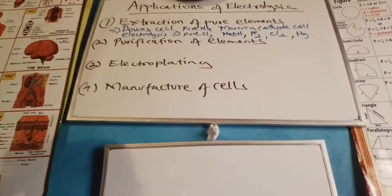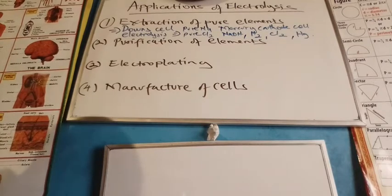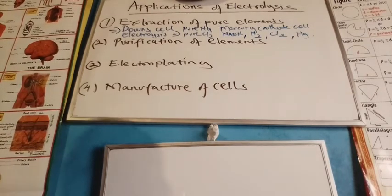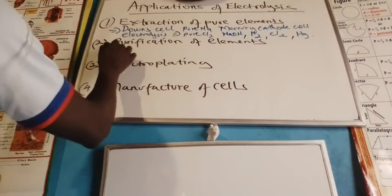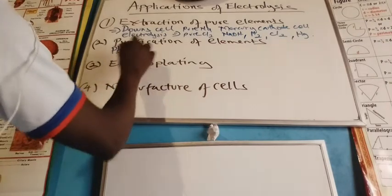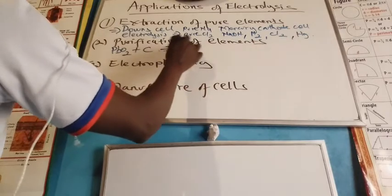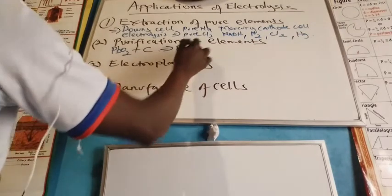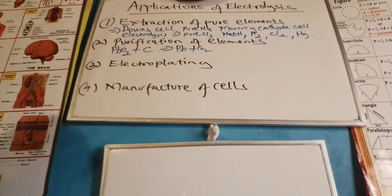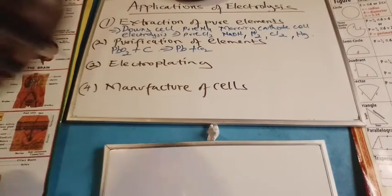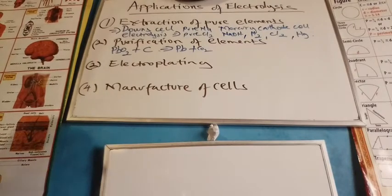The purification of elements is a process by which we could apply in the extraction of metals. For example, in the use of lead oxide, oxidized by, produced by carbon, the process gives us lead and CO2. So we could use electrolysis as a means of purifying elements, like metals from their ores.